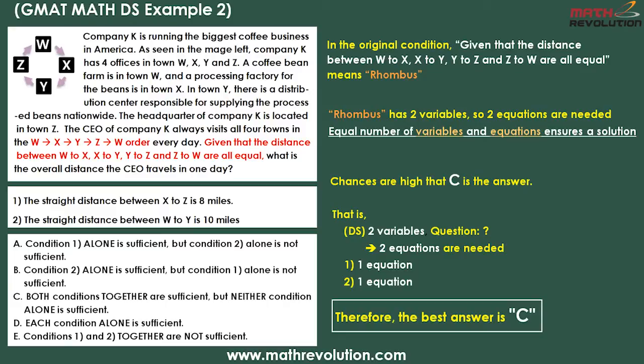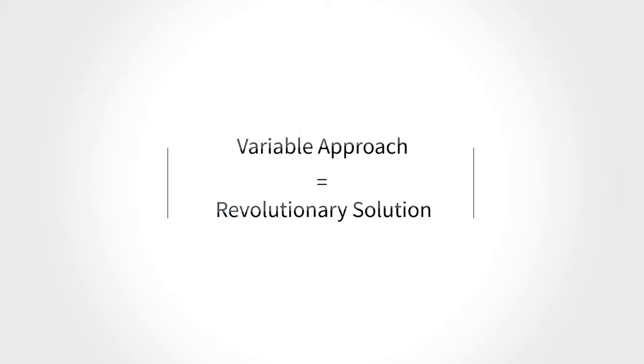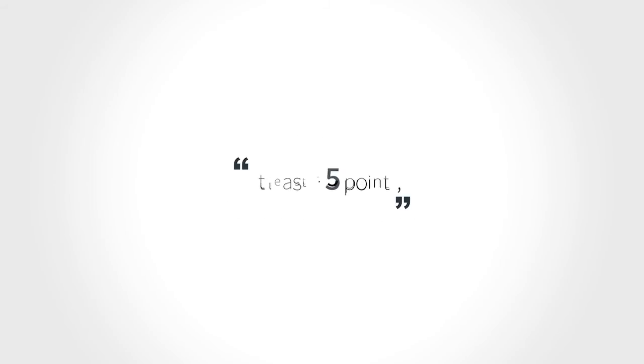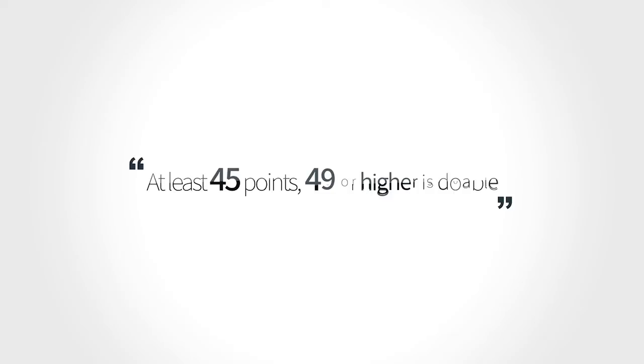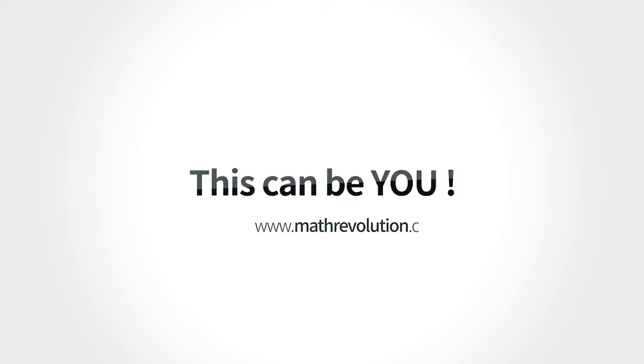So what do you think? Isn't this easy? With 15 years of experience, we have developed a unique and magical approach that will allow you to solve any GMAT math problem with ease, speed, and accuracy. Most of our students hit at least 45 points using the variable approach for solving GMAT Math DS problems — at least 45 points. A majority of them even got 49 points or higher. And this can be you. Come and join us. We're always here at www.mathrevolution.com.